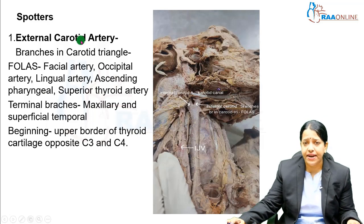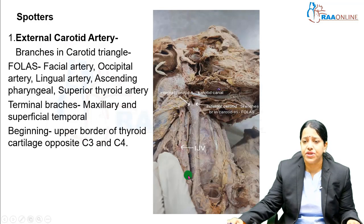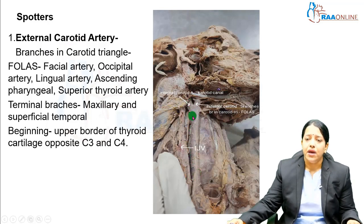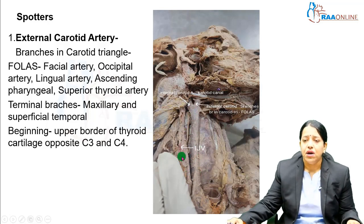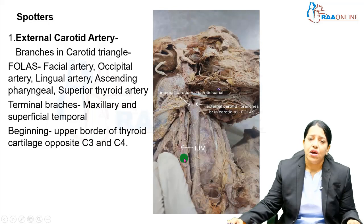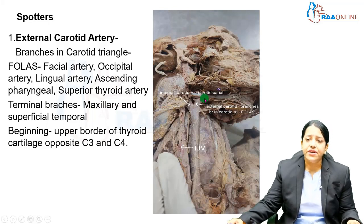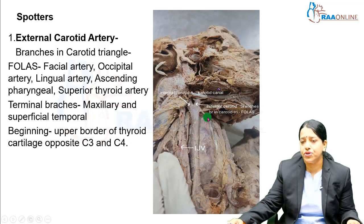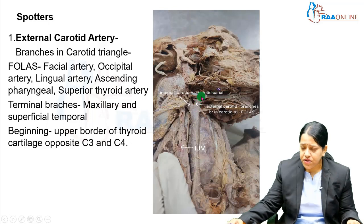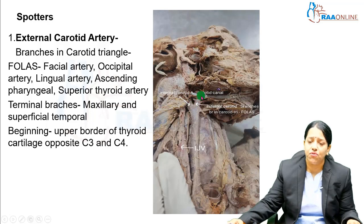The first identifier today is the external carotid artery. You can see the common carotid artery coming up in the neck — it is a content of both the carotid sheath and the carotid triangle. It divides at approximately the upper border of the lamina of the thyroid cartilage into the external carotid artery and internal carotid artery, and this division is clearly visible here.